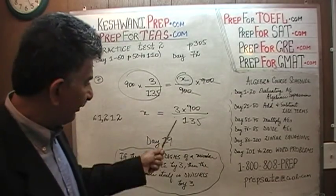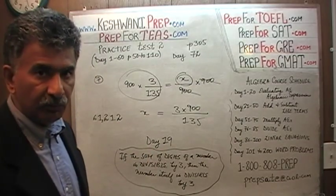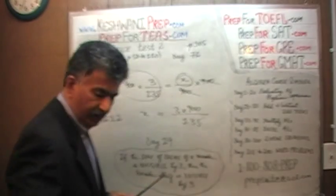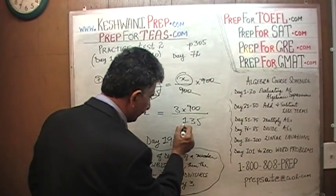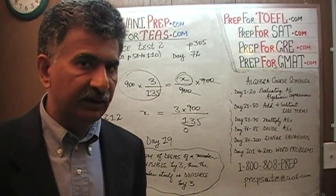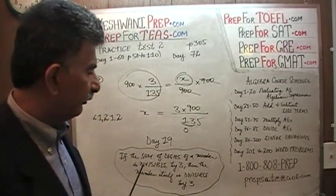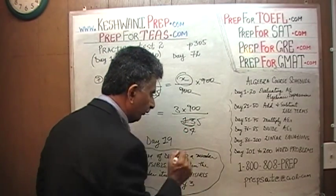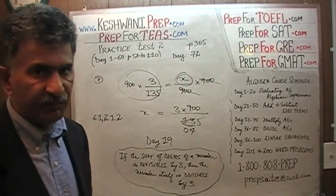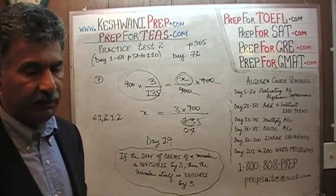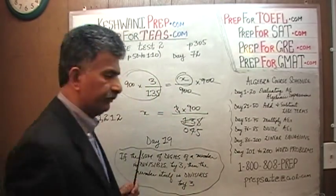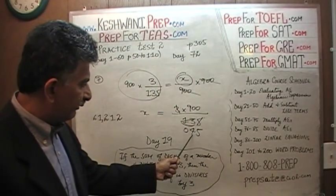We see a 3 on the top, which means we can divide top and bottom by 3. How many 3s in 1? None — so that 1 goes and joins the 3 to become 13. How many 3s in 13? Four — 4 times 3 is 12. The remaining 1 joins the 5 to become 15. How many 3s in 15? Five. So now what we're left with at the bottom is 45.